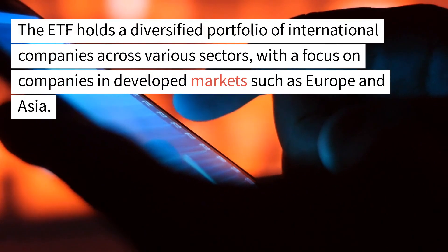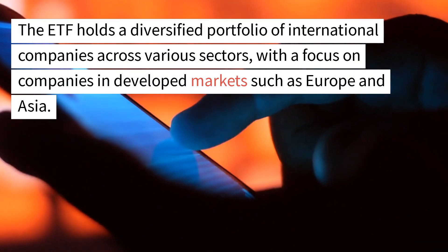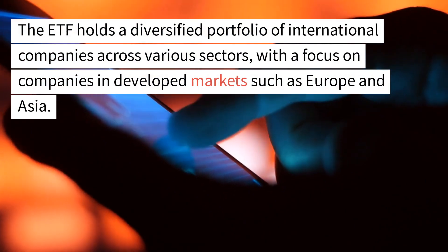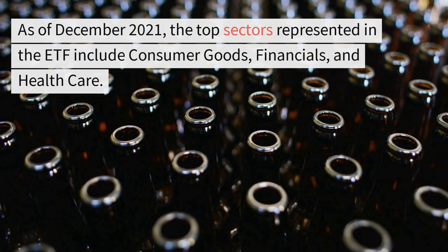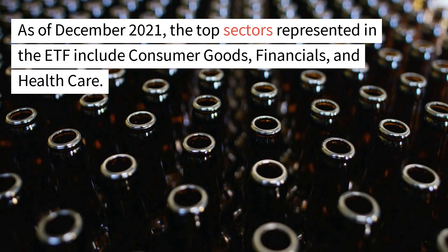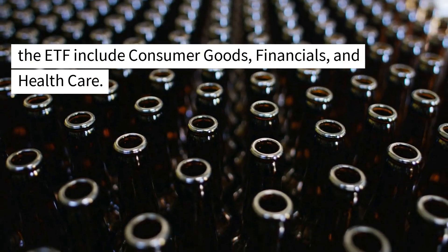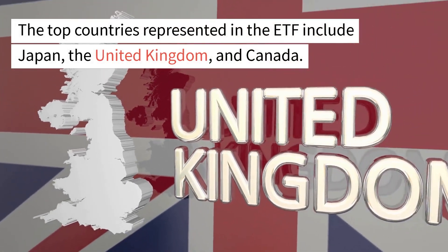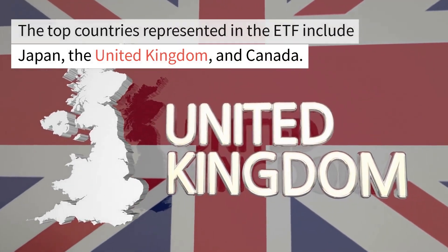The ETF holds a diversified portfolio of international companies across various sectors, with a focus on companies in developed markets such as Europe and Asia. As of December 2021, the top sectors represented in the ETF include consumer goods, financials, and healthcare. The top countries represented in the ETF include Japan, the United Kingdom, and Canada.